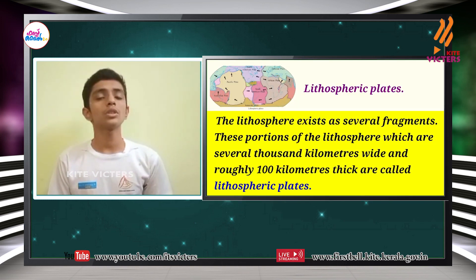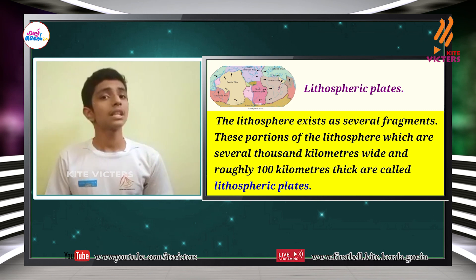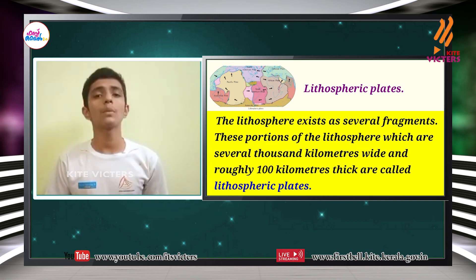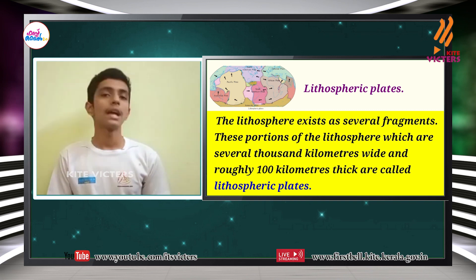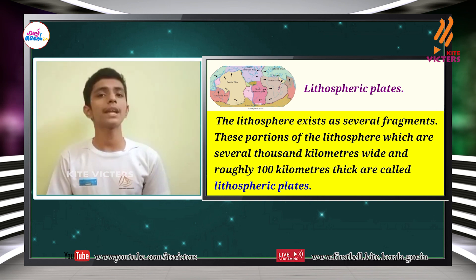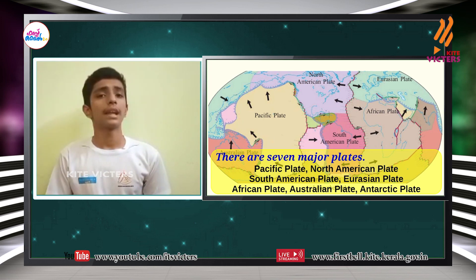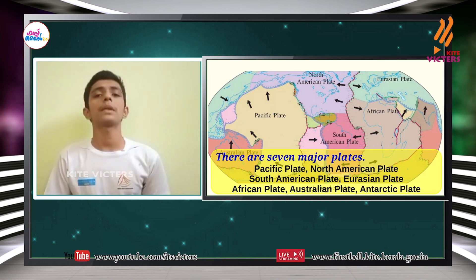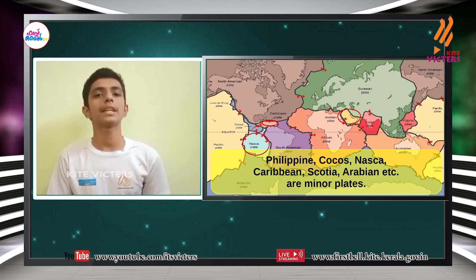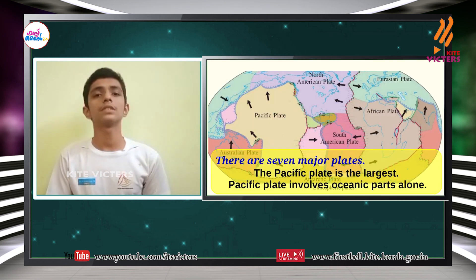We know that the portions of the lithosphere which are several thousand kilometers wide and roughly 100 kilometers thick are called lithospheric plates. There are two types of lithospheric plates: the major plates and the minor plates. There are seven major plates. Among them, the Pacific plate is the largest one. The Pacific plate involves the oceanic parts alone.